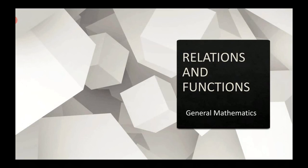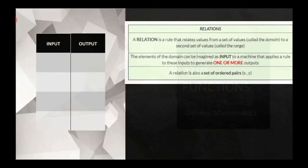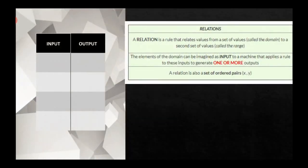This video is all about relations and functions. A relation is a rule that relates values from a set of values called the domain to a second set of values called the range. The elements of the domain can be imagined as input to a machine that applies a rule to these inputs to generate one or more outputs.